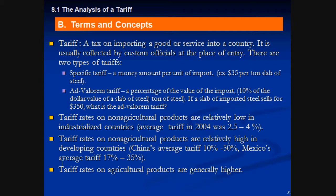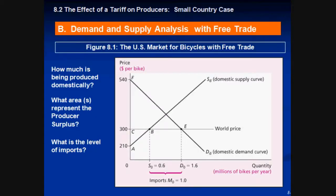Tariffs on agricultural products are generally higher. I'm guessing it's because in the US and some other countries, we fill our meat and vegetables with hormones to make them grow faster, and other countries don't want that in their food, so they charge a lot in taxes.